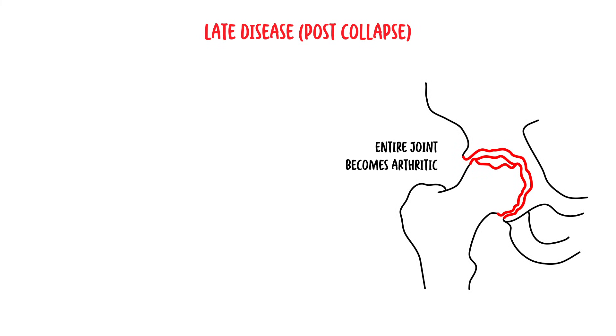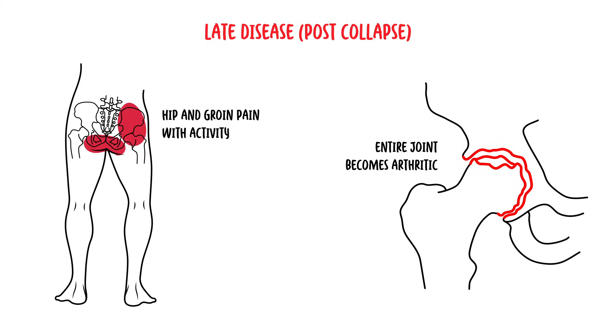In the late stage of the disease, termed post-collapse, it may take several months to years for the disease to progress. As the surface of the femoral head collapses, the entire joint becomes significantly arthritic. Hip and groin pain with activity is very common, and later the pain is also present at rest. There is reduced range of motion and stiffness.